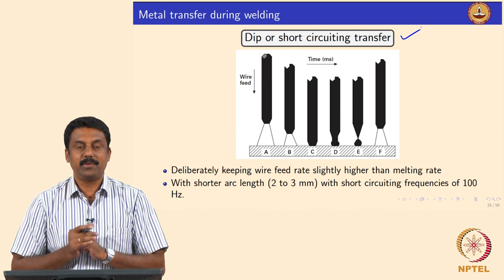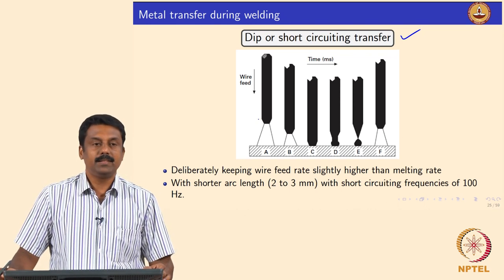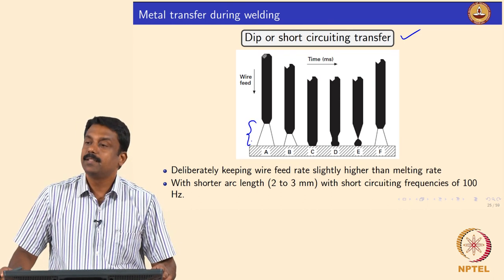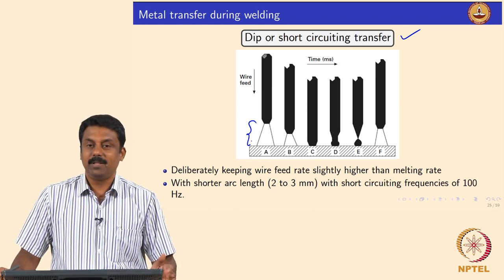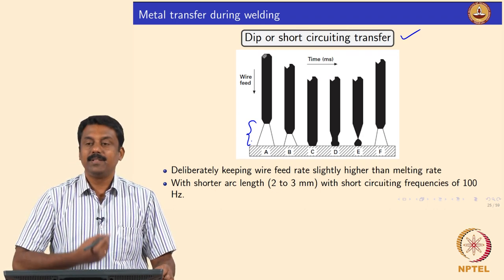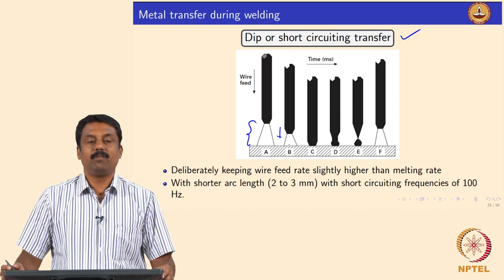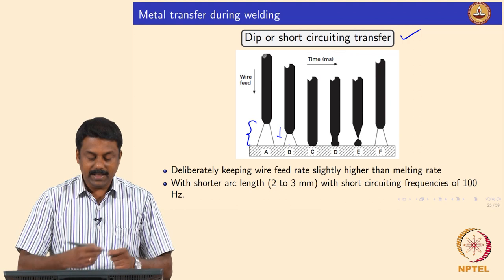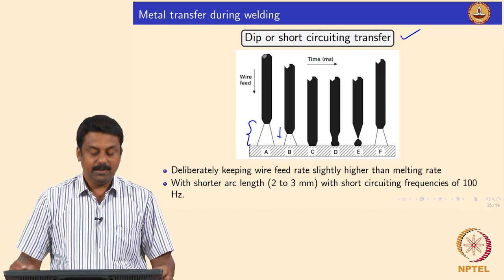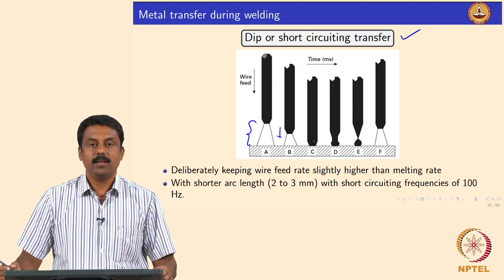Here is an example schematic from John's book. The wire is continuously fed. If the melting rate equals the wire feed rate, the arc length becomes constant. But you can also carefully manipulate the feeding rate such that you slowly bring the wire towards the workpiece or the weld pool. By increasing the speed of wire feeding, you can slowly bring the filler to the workpiece and establish a short circuit.